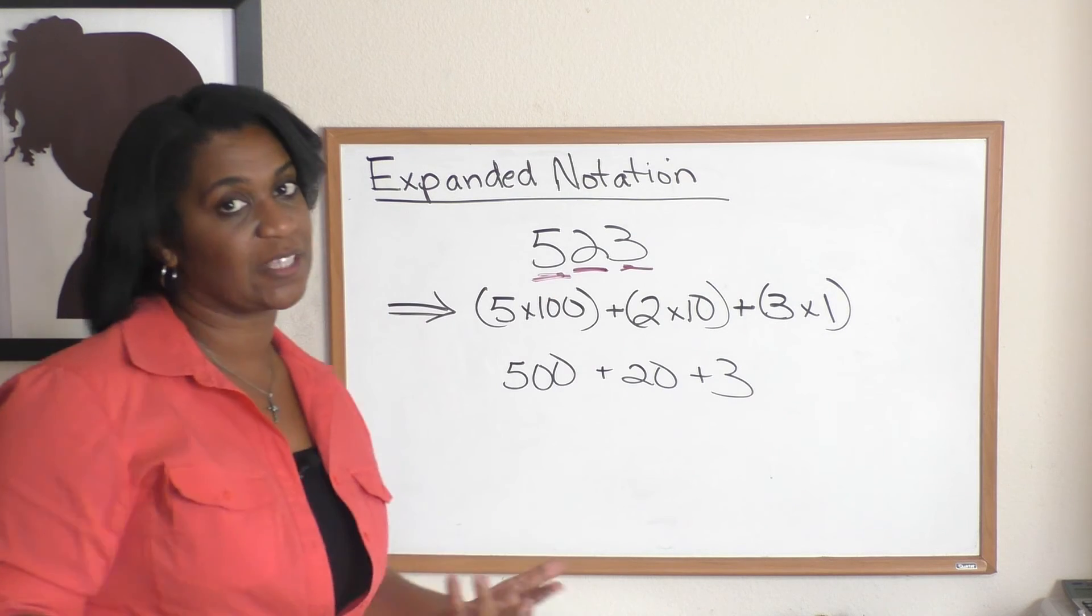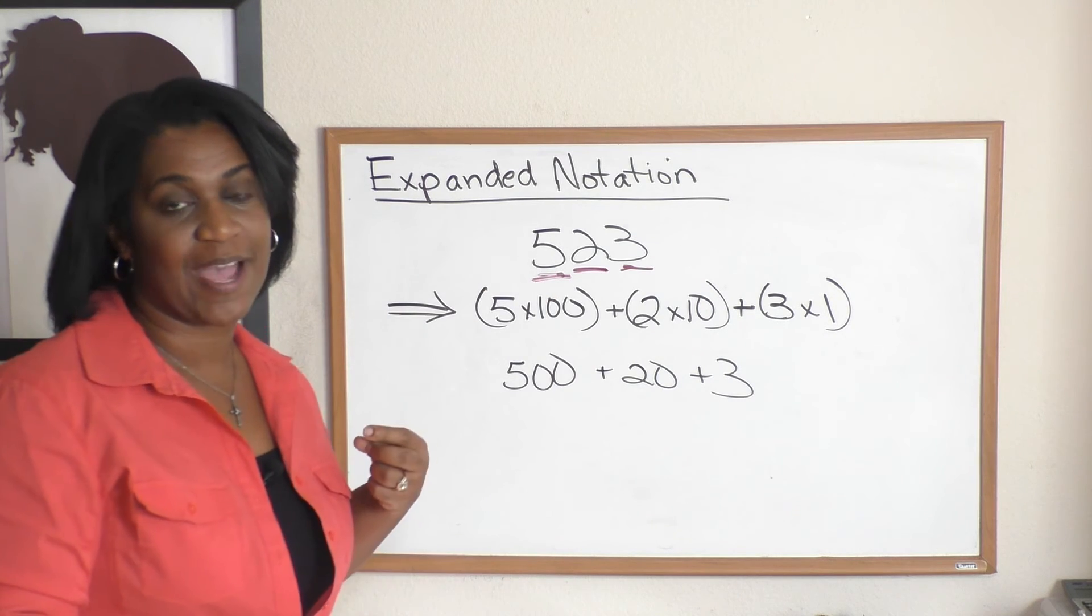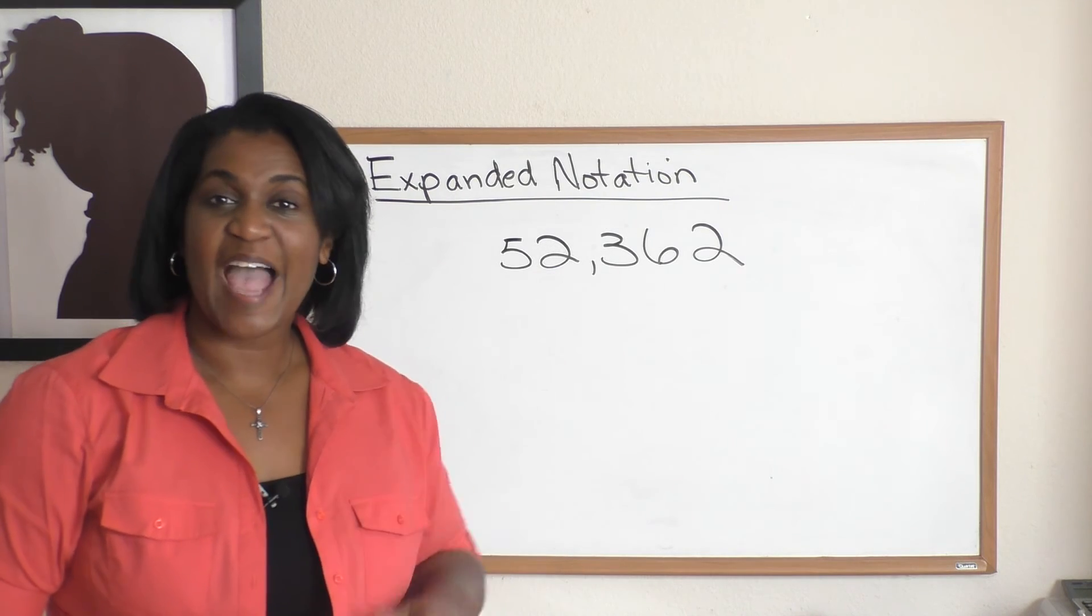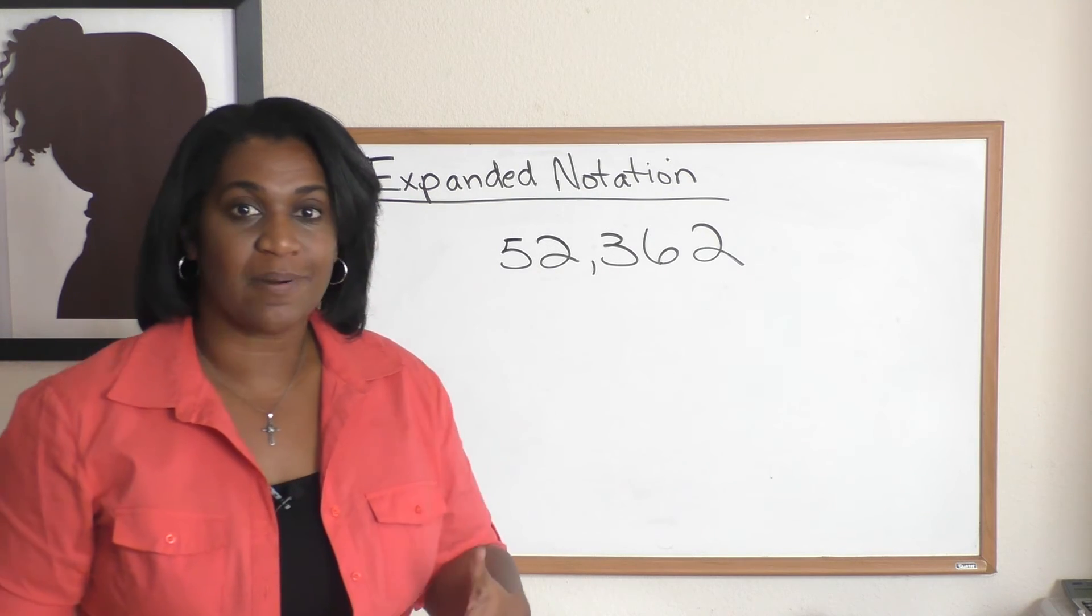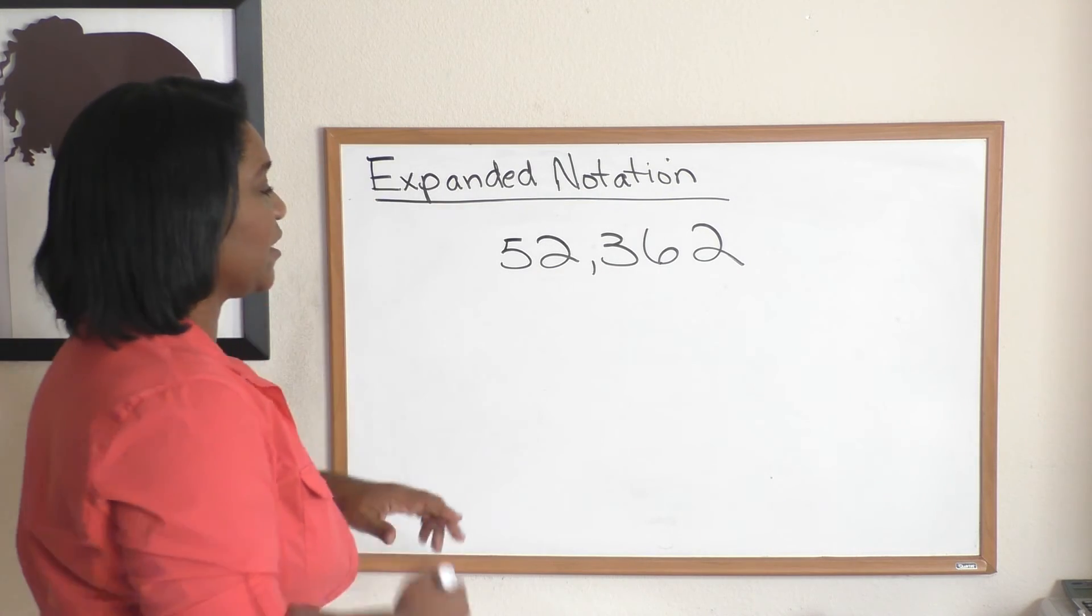Okay, expanded notation is very simple. All you've got to do is look at the place value and expand it out. Let's try another example. This time I've given you a little bit of a bigger number. So let's start on the left here and let's start with the five.